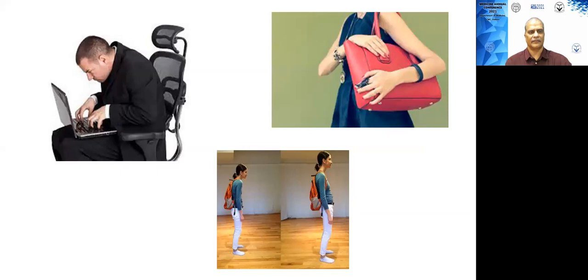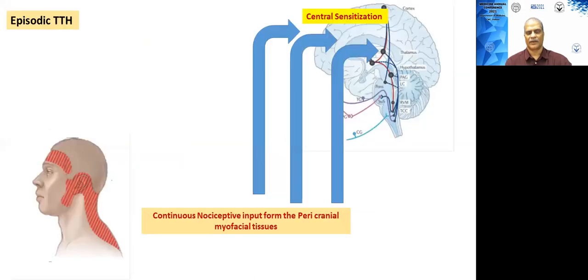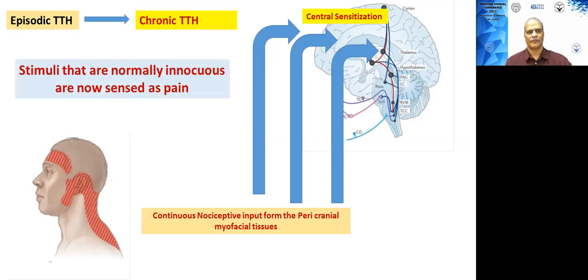Other triggers include bad posture when using computers, or carrying a heavy handbag or backpack. Whatever the trigger, if there is continuous nociceptive input, the brain undergoes a change called central sensitization. When this happens, the patient enters into the chronic phase of tension type headache, because once central sensitization occurs, even stimuli that are normally innocuous are now sensed as pain by the brain.